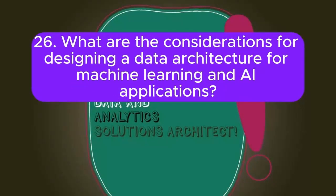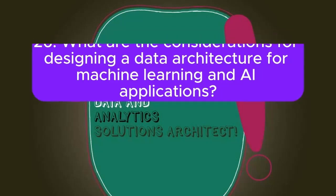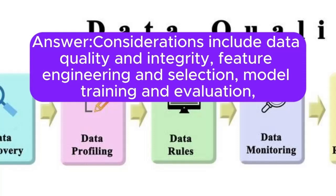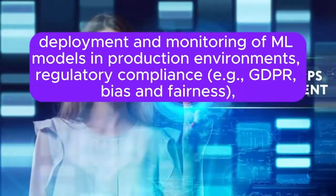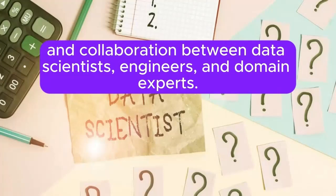Question 26: What are the considerations for designing a data architecture for machine learning and AI applications? Considerations include data quality and integrity, feature engineering and selection, model training and evaluation, scalability and performance of data processing pipelines, interpretability and explainability of models, deployment and monitoring of ML models in production environments, regulatory compliance such as GDPR, bias and fairness, and collaboration between data scientists, engineers, and domain experts.